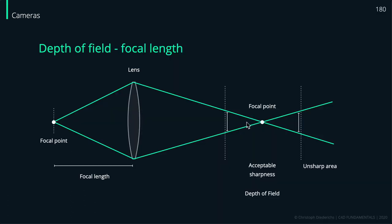To understand what affects the blurriness or sharpness of an image, we have to look at three things: focal length, aperture, and distance to the object. The focal length is the distance of your lens to your sensor. The acceptable sharpness area, or depth of field, is defined by the distance between two light rays in this simplified illustration. The bigger that distance, the more unsharp the image will be. With a given focal length, we get a certain area that appears sharp.